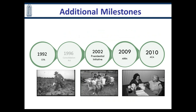Additional milestones: in 1992, the EPA introduced the Worker Protection Standards, which protect against pesticide exposure. We talked about the Consolidation Act in 1996. In 2002, the Presidential Initiative helped to expand and strengthen community and migrant health centers. In 2009, the American Recovery and Reinvestment Act increased funds for capital improvement, service expansion, and added new access points. And in 2010, the Affordable Care Act increased health centers and expanded coverage.